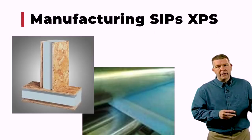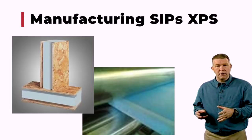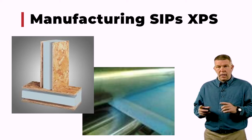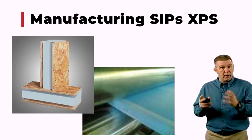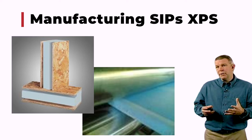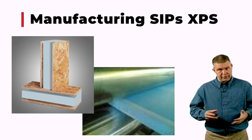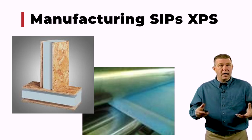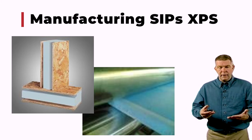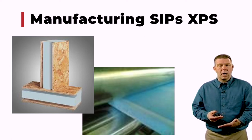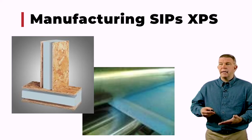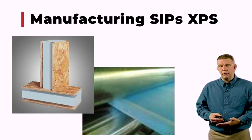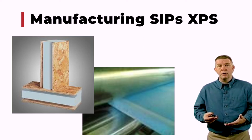Moving away from EPS, we now go to XPS — extruded polystyrene. This is where we can use the term styrofoam. Styrofoam is the blue material; Owens Corning makes a pink XPS material. It's the same styrene, but instead of molding into a block, it's extruded — the material is forced through a die, and when squeezed out and dried, it gives you board stock. This board stock is used exactly as EPS was — we apply the adhesive and go into a press.